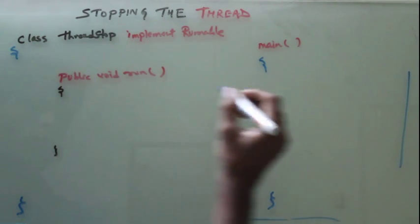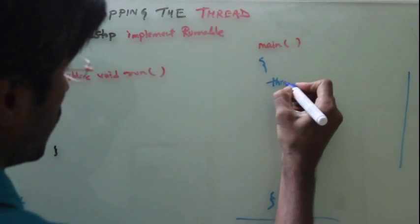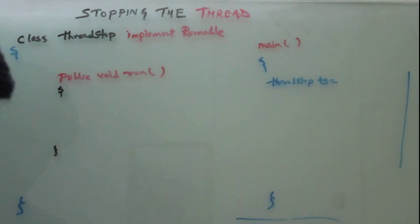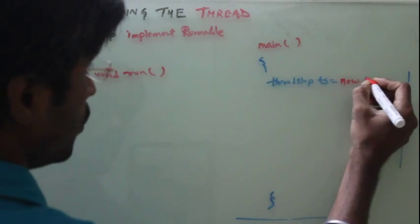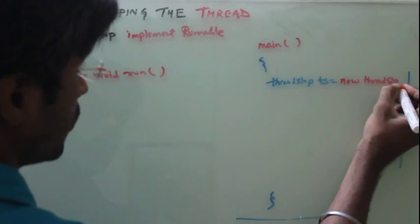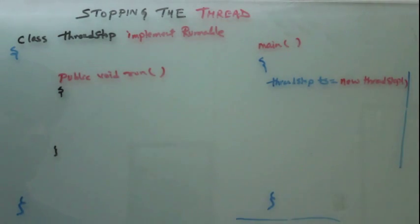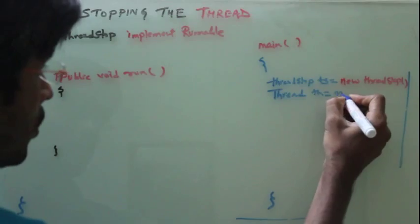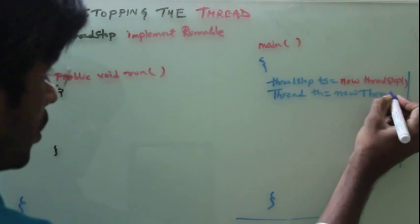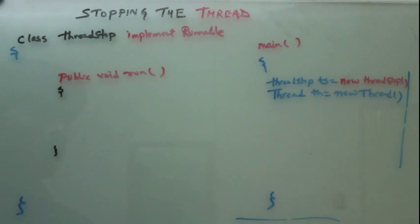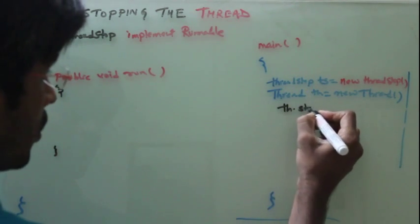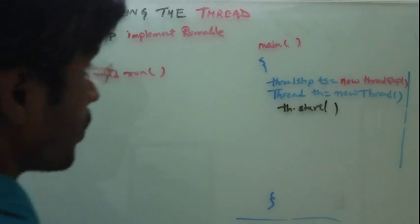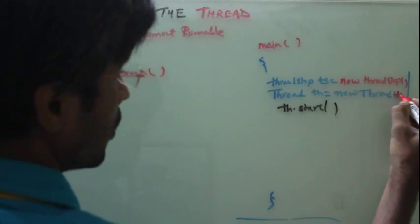What this will do? This will create a threadStop object. I will say threadStop ts equals new threadStop. Then what I will do? I will create a new thread object. Thread th equals new thread. Then I will say th.start. So it's a new thread of ts.